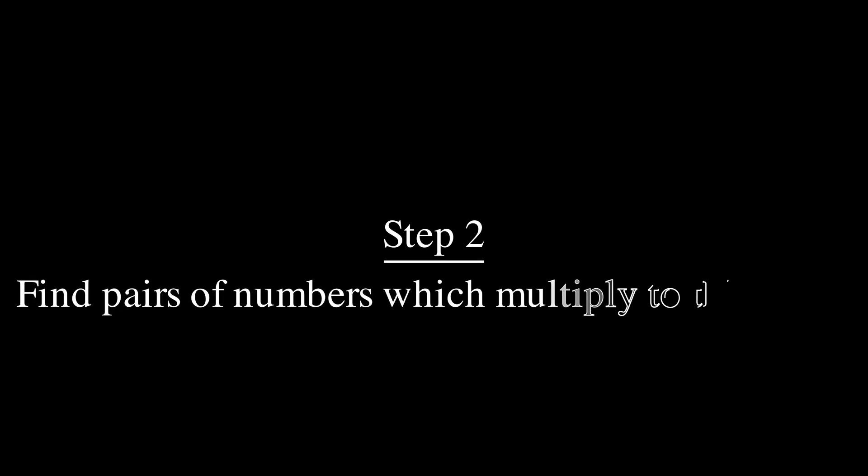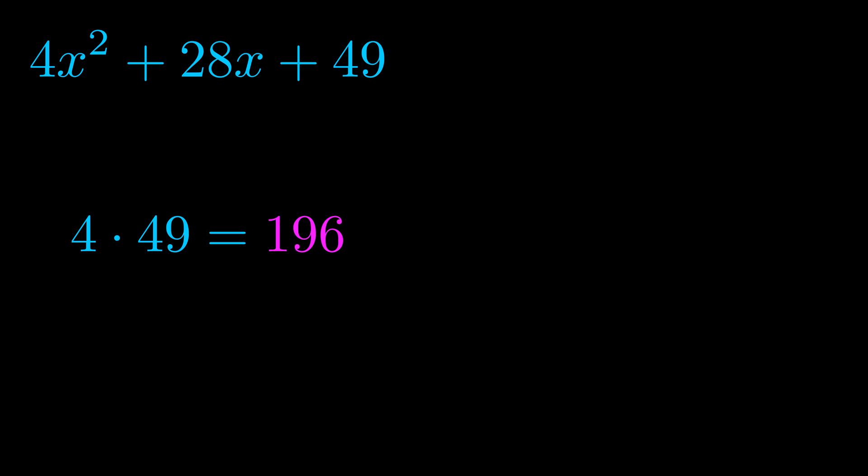Step two is to try to find all of the pairs which multiply to this number. Now, it turns out you don't really need to find all of them, but go ahead and write down as many numbers as you can that multiply to the magenta value for now. Pause the video and resume when you're ready to continue. Okay, here's what I came up with.